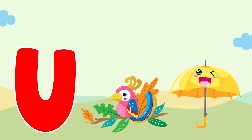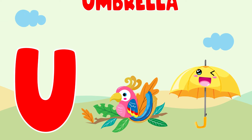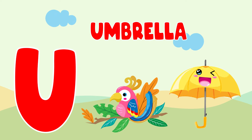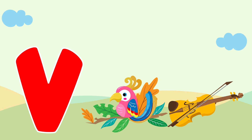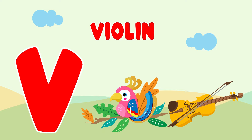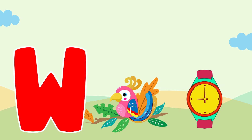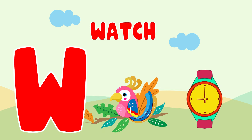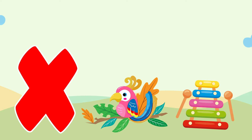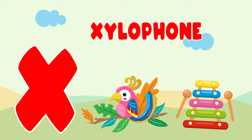U is for umbrella, u-u-umbrella. V is for violin, v-v-violin. W is for watch, w-w-watch. X is for xylophone, x-x-xylophone.